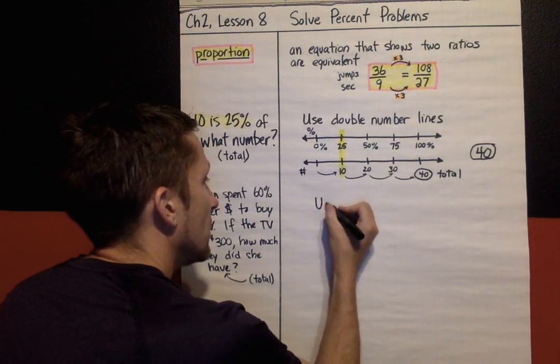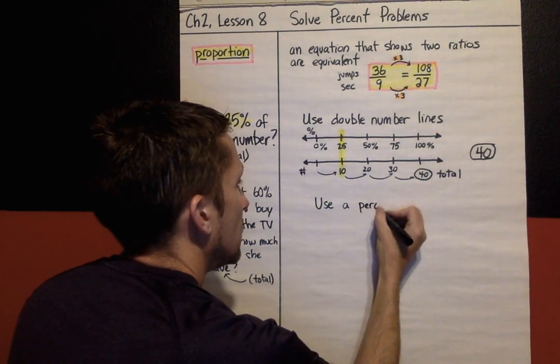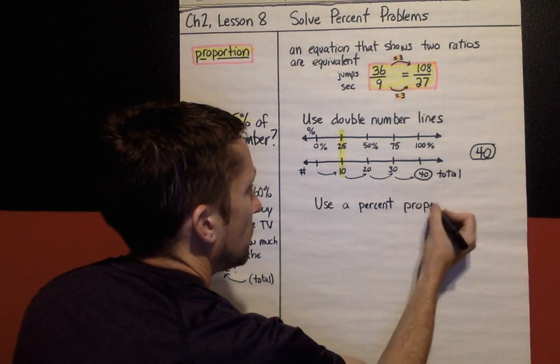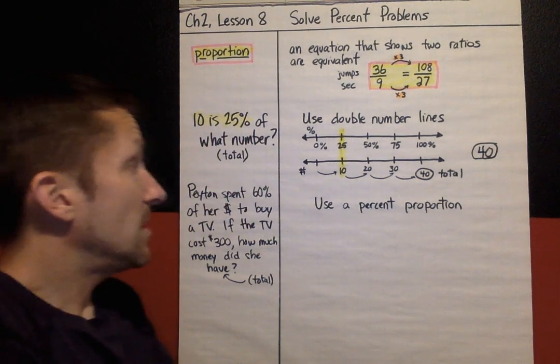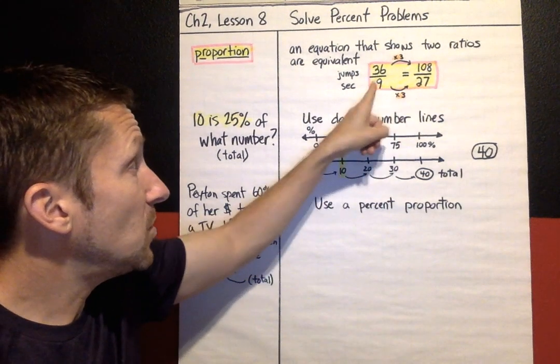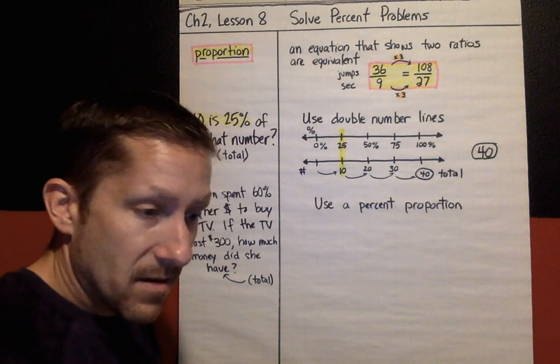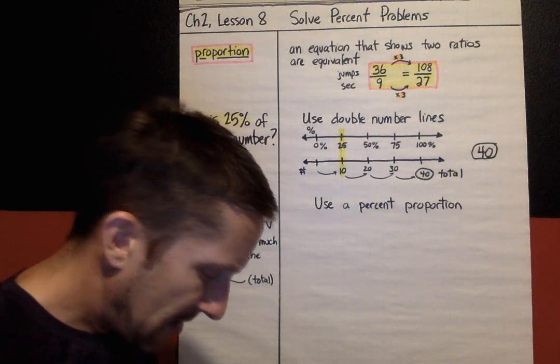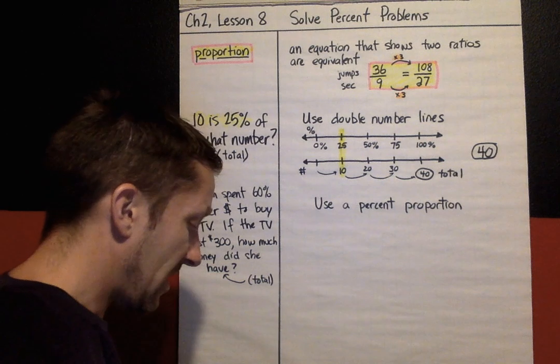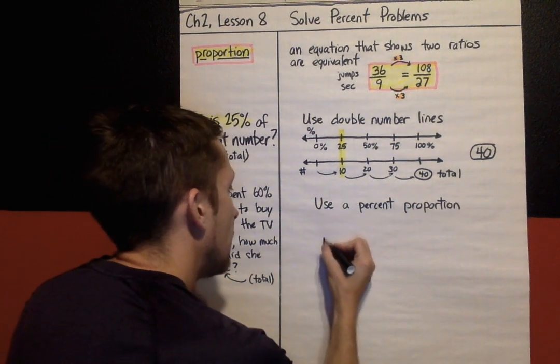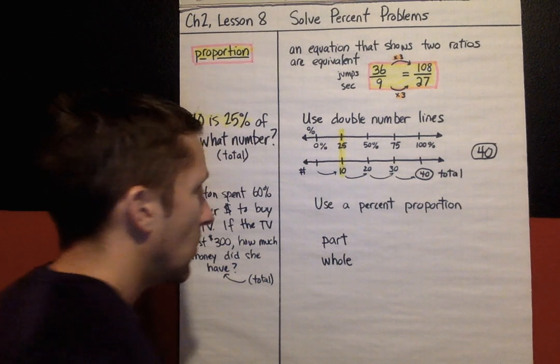The strategy we're going to use here is called use a percent proportion. Well, I know that a proportion is going to look like this. It's going to be two ratios that are equal to each other. So when I'm setting up a percent proportion, I want to do this. I've got a part and I've got a whole or a total.